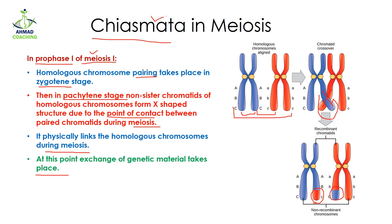So chiasmata is the X-shape structure formed because of the point of contact between the non-sister chromatids of homologous chromosomes. Because of this, the exchange of genetic material takes place by the help of crossing over. That was chiasmata in meiosis.